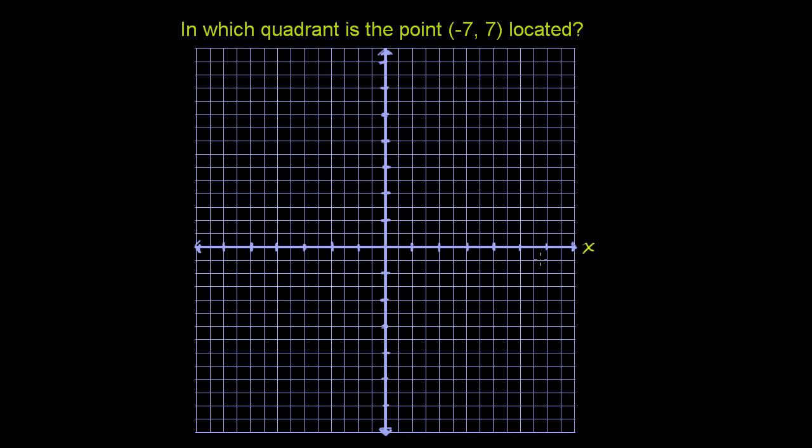So this right here is the x-axis, and this up-down axis is the y-axis. And you can see it divides the coordinate plane into four sections.